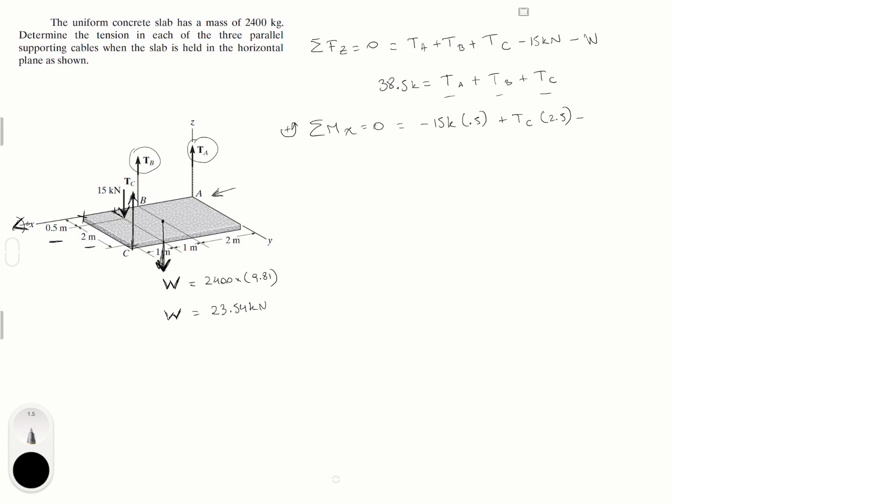Minus the weight, which is 23.54k times 1.25, because the moment created by the weight, which is the distance from here to here times the weight, is half of 2.5, which is 1.25. When you solve this you notice that you only have one variable here, so this is awesome. T_C is equal to 14.77 kilonewtons, and we already have one of the answers.